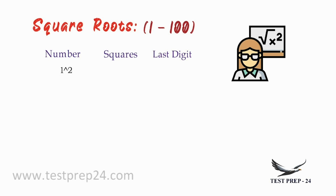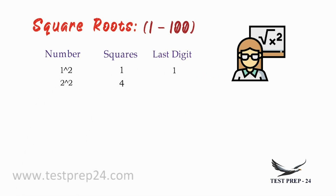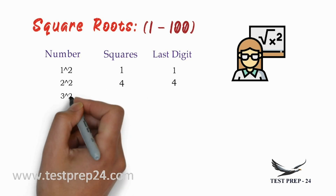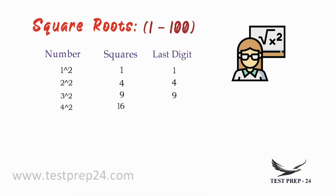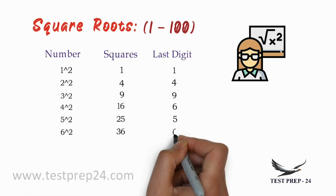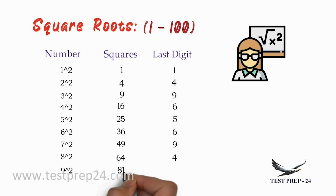For 1, 1 square is 1. For 2, 2 square is 4 and last digit is 4. 3 square is 9 and last digit is 9. 4 square is 16 and last digit is 6. 5 square is 25 and last digit is 5. 6 square is 36 and last digit is 6. 7 square is 49 and last digit is 9. 8 square is 64 and last digit is 4. 9 square is 81 and last digit is 1. 10 square is 100 and last digit is 0.